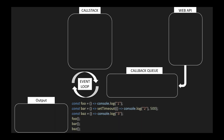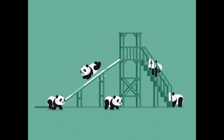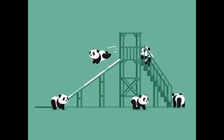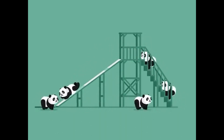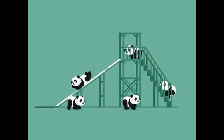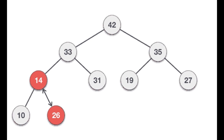Asynchronous tasks are handled by the event loop, which is a mechanism that handles the execution of asynchronous tasks. It is an infinite loop that waits for tasks to be added to the task queue and then executes them in the order they were added. It is a part of the browser's JavaScript runtime, and it uses two important data structures to handle asynchronous tasks: stack and queue.